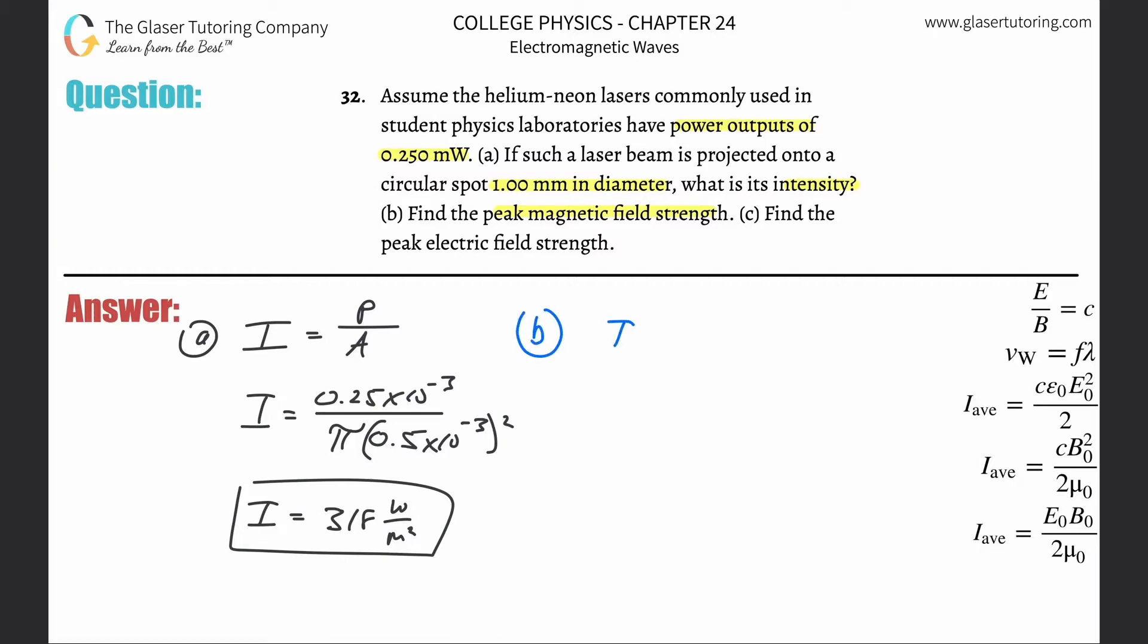So we know that this formula, the average intensity, and that's what we're going to assume we calculated, is going to be equal to the speed of light multiplied by the peak magnetic field squared divided by two times the permeability of free space.